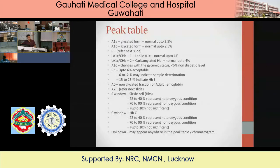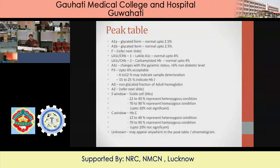If P3 is between 6–12%, sample integrity is questionable. For pool labs receiving samples from distant locations — say a sample that has traveled two days — the sample might have degraded, giving a high P3. I always recommend asking for a fresh sample, because high P3 always indicates sample degradation. If P3 is between 15–25%, it gives an idea about HbJ Mirat, one of the alpha gene product types.